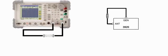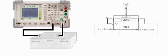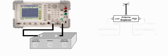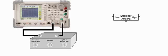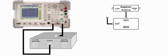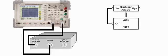After storing the reference trace, the two cables are disconnected from the barrel adapter. The gen cable is connected to the duplexer antenna port. The antenna cable is connected to the duplexer low passband port. The unconnected high passband port is terminated by connecting the 50 ohm load to it.